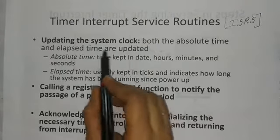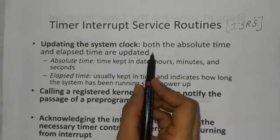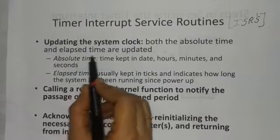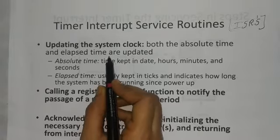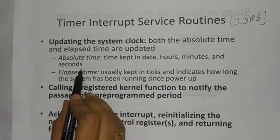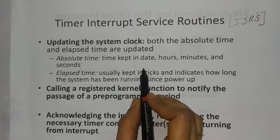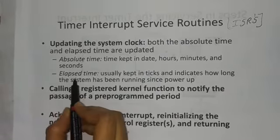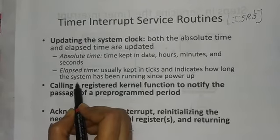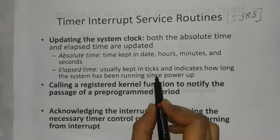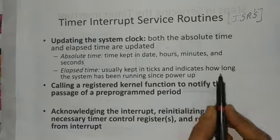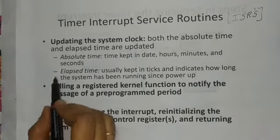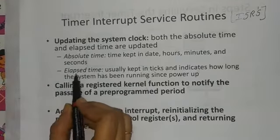The first step is updating the system clock. Here we use two types of timing mechanisms: absolute time and elapsed time. Absolute time is the time kept in date, hours, minutes, and seconds. Elapsed time is usually kept in ticks and indicates how long the system has been running since power up. These are the two types of timing mechanisms maintained in the ISRs.